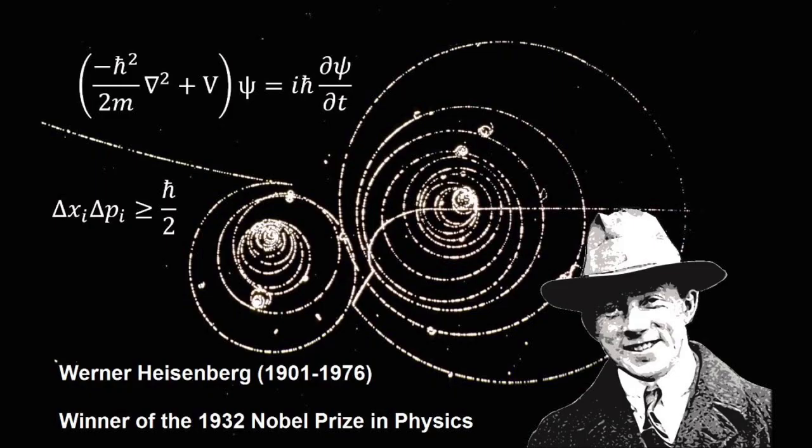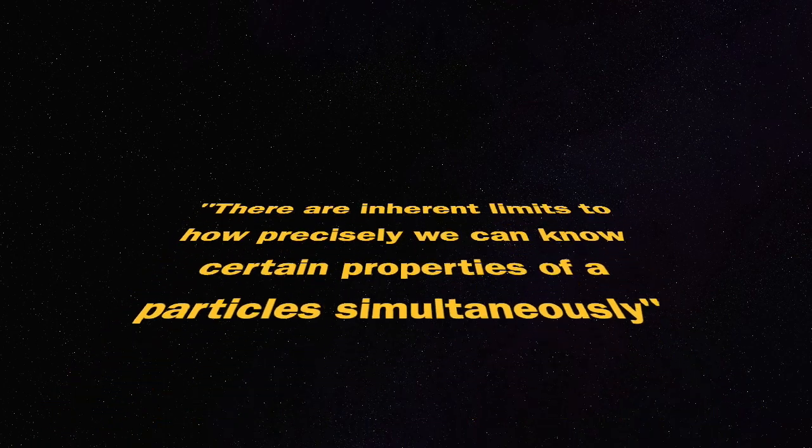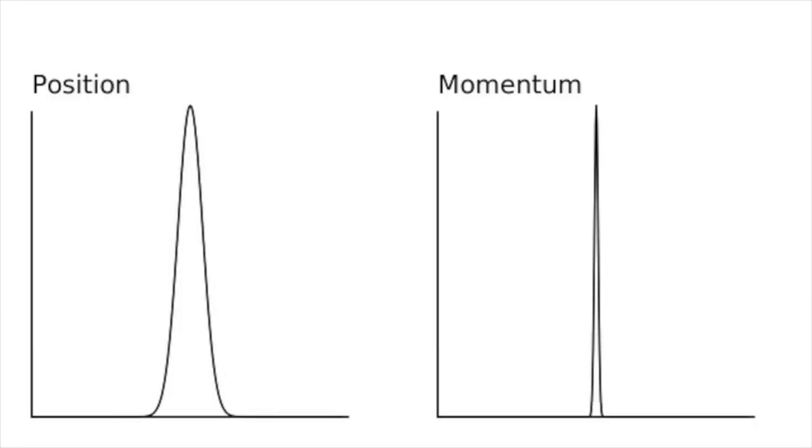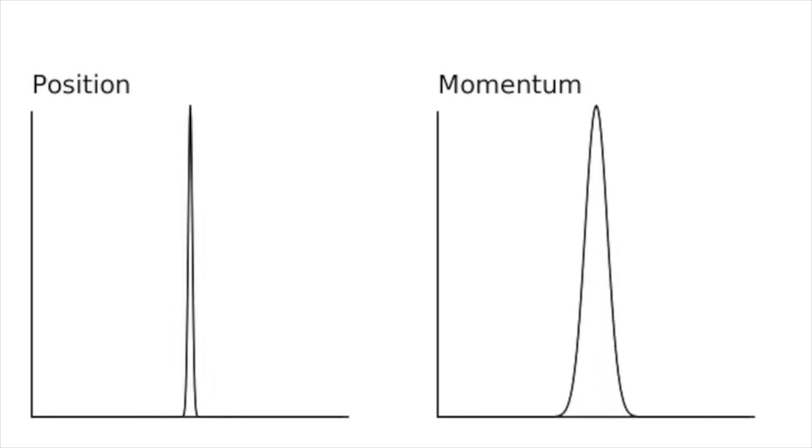The uncertainty principle, formulated by Werner Heisenberg in 1927, states that there are inherent limits to how precisely we can know certain properties of a particle simultaneously. Specifically, it refers to the uncertainty in measuring a particle's position and momentum.